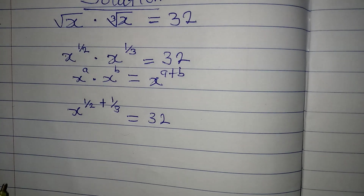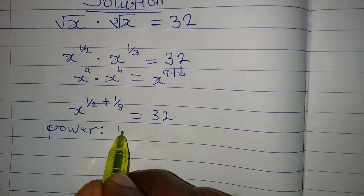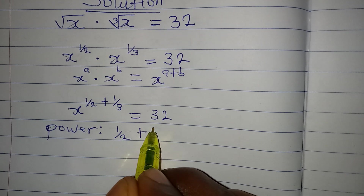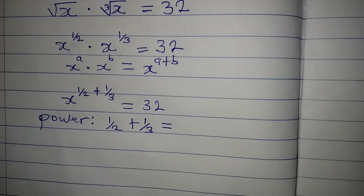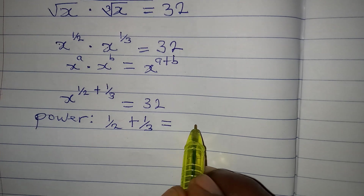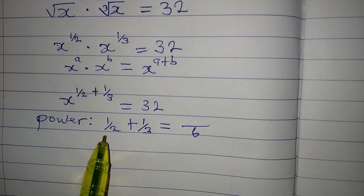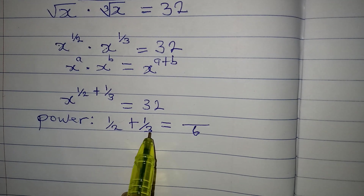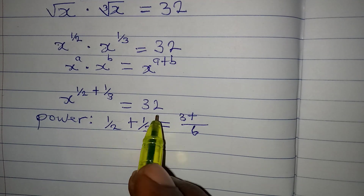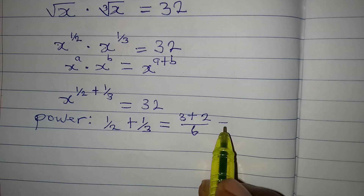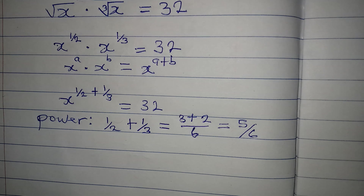Let me work with the exponent. We have 1 over 2 plus 1 over 3. The fastest way is to multiply 2 and 3, which gives us 6. Then cross multiply: 3 times 1 gives 3, plus 2 times 1 gives 2. At the end of the day we have 5 over 6 as the power.